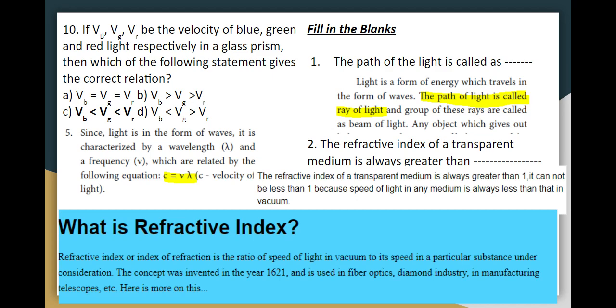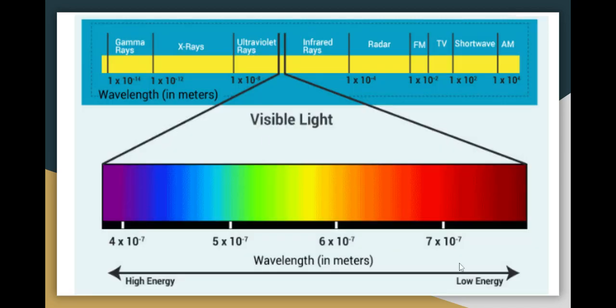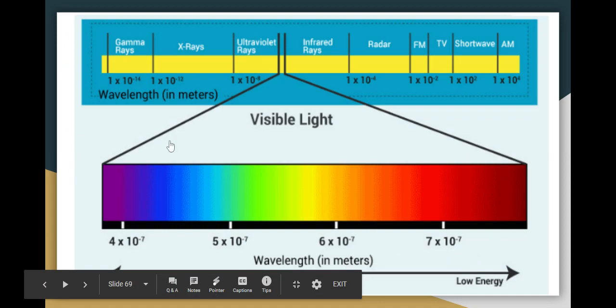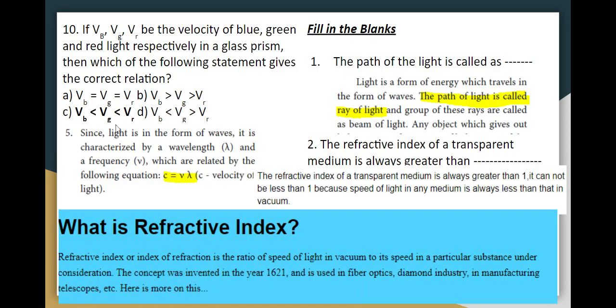For velocity of blue, green, and red light (vB, vG, vR) through a glass prism: using the equation c = frequency × wavelength, velocity is directly proportional to wavelength. Red light has a longer wavelength than blue, so red light travels faster than blue in the medium. The answer is Option C.